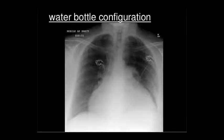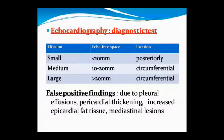On chest X-ray, you can see the water bottle configuration — the heart shadow looks like a water bottle. On echocardiography, effusion-free space is measured: small is less than 10 mm, medium is 10-20 mm circumferential, and large is more than 20 mm. False positive findings include pleural effusion and pericardial thickening.